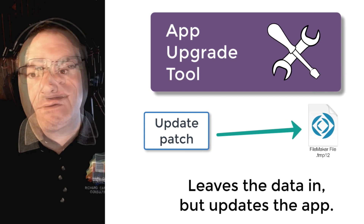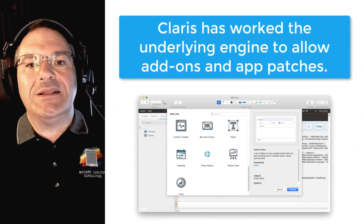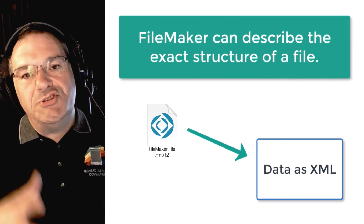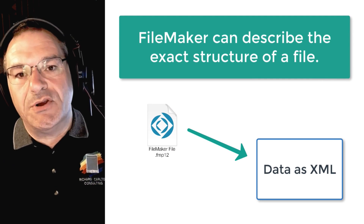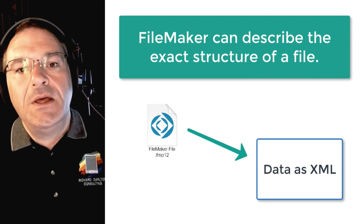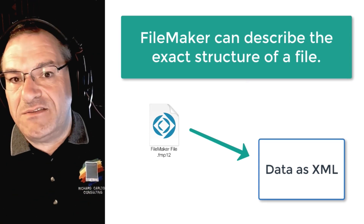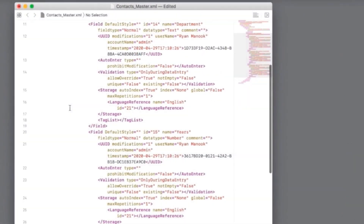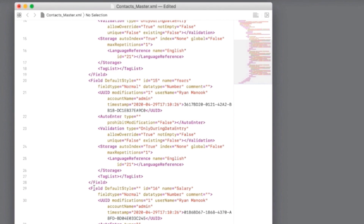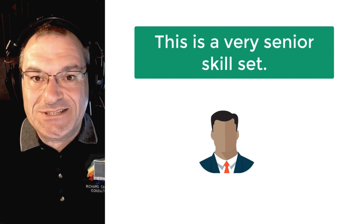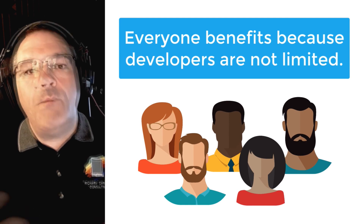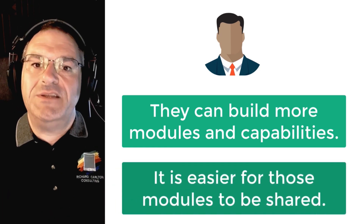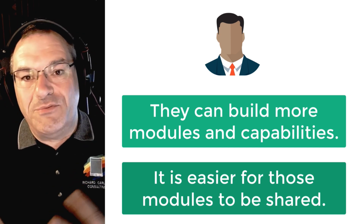FileMaker calls this the app upgrade tool. Claris has been working on the underlying engineering that allows us to have add-on modules or app upgrade patches — and that technology is effectively the same. It's the ability for FileMaker to describe in precise detail the exact structure of each FileMaker file. Historically, this was never possible because FileMaker was written on a proprietary engine. Now you can actually export all the code of your FileMaker custom application, go into it in a text editor, change items, and identify sections of code to patch into another file. This is a very senior skill set, but what's great for everyone else is that senior developers can build more modules and capabilities that are easier to share between different users without rebuilding from scratch in every solution.